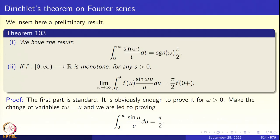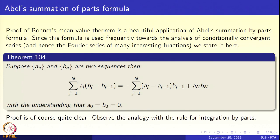We proved this auxiliary result, Theorem 1.0.3: the integral from 0 to infinity of sin(ωt)/t dt equals signum(ω) times π/2. And if you take a monotone function, then for any s greater than 0, the limit as ω tends to infinity of the integral from 0 to s of f(u) sin(ωu)/u du equals π/2 times f(0+). This also we established last time. Now let us get straight to the proof of Bonnet's mean value theorem.